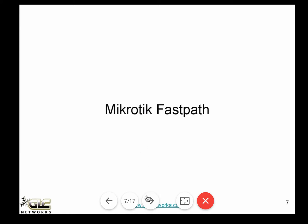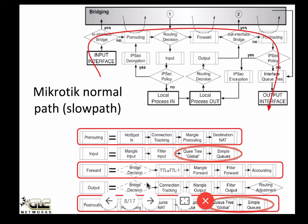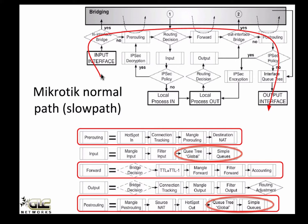MikroTik FastPath. Before we talk about FastPath, we need to understand MikroTik's normal path, also known as slow path. You already know that MikroTik — since you're familiar with Linux — MikroTik is made from the Linux kernel. So this kind of IP flow, or packet flow as we call it in MikroTik, should be familiar. When a packet comes into an interface, it will be processed through the pre-routing chain — we call it a table because we use IP tables.